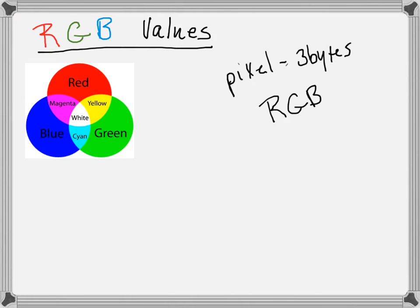Each value, each channel — the red channel, the green channel, the blue channel — can be turned up to maximum or completely turned off. Each of these channels, red, green, and blue, is a byte of information, which is eight bits.